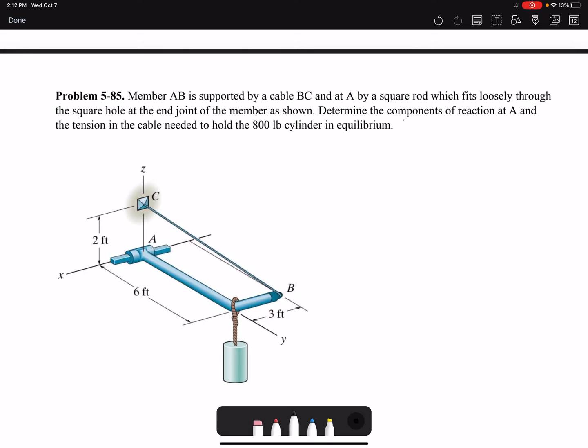Member AB is supported by a cable BC and at A by a square rod which fits loosely through the square hole at the end joint of the member as shown. Determine the components of reaction at A and the tension in the cable needed to hold the 800 pound cylinder in equilibrium.